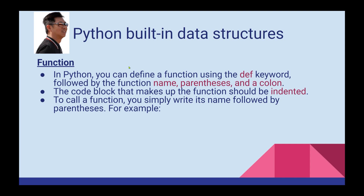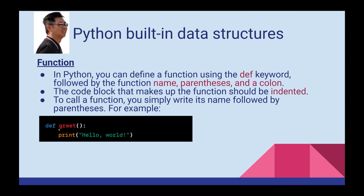In Python, you can define a function using the DEF keyword, followed by the function name, parentheses, and a colon. The code block that makes up the function should be indented. To call a function, you simply write the function name followed by parentheses.